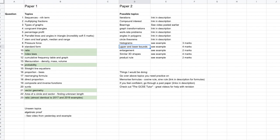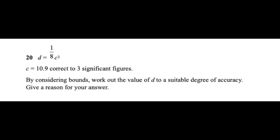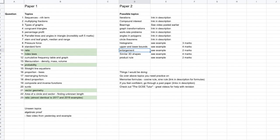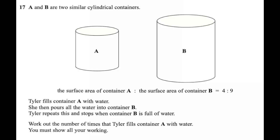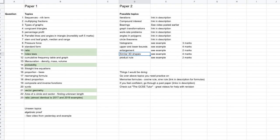Upper and lower bounds — here is an example of an upper and lower bounds question, a four mark question. They typically go for four or sometimes five marks — the type where you calculate volume or calculate upper and lower bounds of measurements of something, and then round to a suitable degree of accuracy. Enlargement — here's a two mark example question, typical for that topic. Similar 3D shapes — here is a four mark example question; these typically go for about three or four marks. Worked solutions will be in the description.